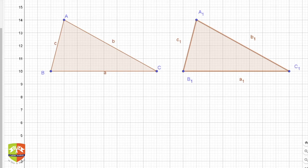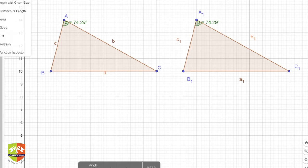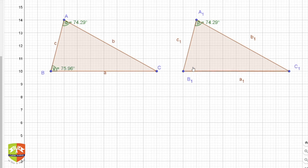For angles, angle A corresponds to A₁, B corresponds to B₁, and C corresponds to C₁. Let's measure these angles to verify. Angle α is 74.29°, and this one is also 74.29°. Angle B is 75.96°, and B₁ is also 75.96°. This one is 29.74°, and this one is also 29.74°. All corresponding angles are equal.